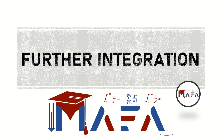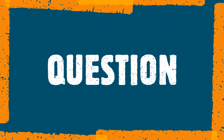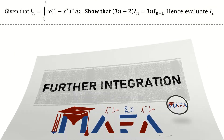In this video we are going to focus on further integration. We are going to be solving a tutorial question which was proposed by one of the students in our WhatsApp group who faced difficulty with the problem. The question reads: given that I of n is equal to the integral from 0 to 1 of x times (1 minus x cubed) all raised to the power n dx, show that (3n plus 2) times I of n is equal to 3n times I of n minus 1, hence evaluate I2.